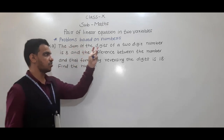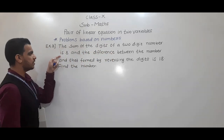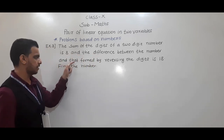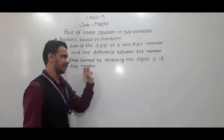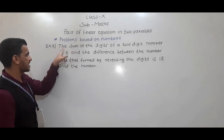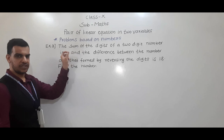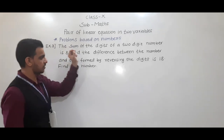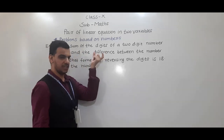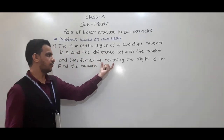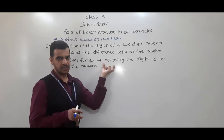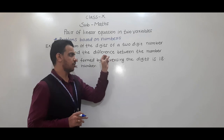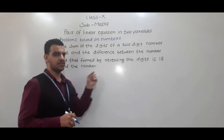Third example: the sum of the digits of a two-digit number is 8, and the difference between the number and that formed by reversing the digits is 18. The first condition gives the sum of the digits, and the second condition says the difference between the original number and the reversed number is 18.